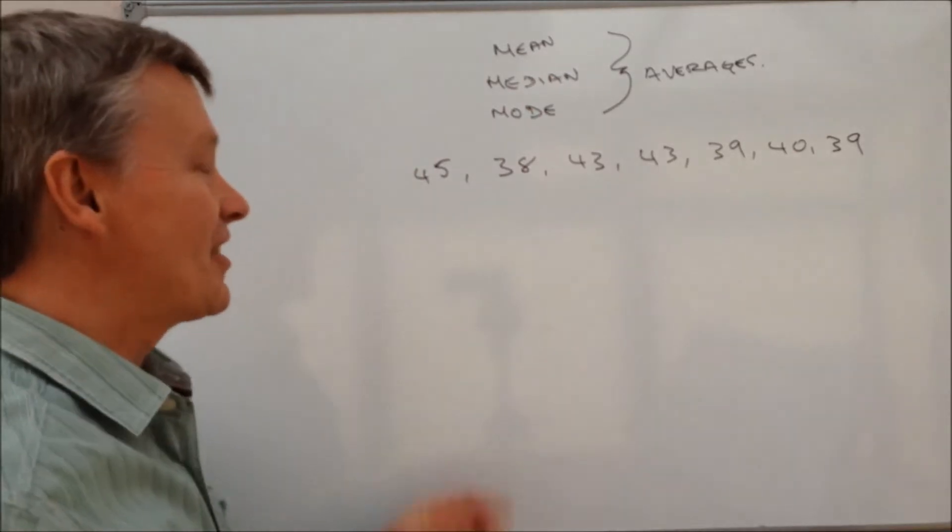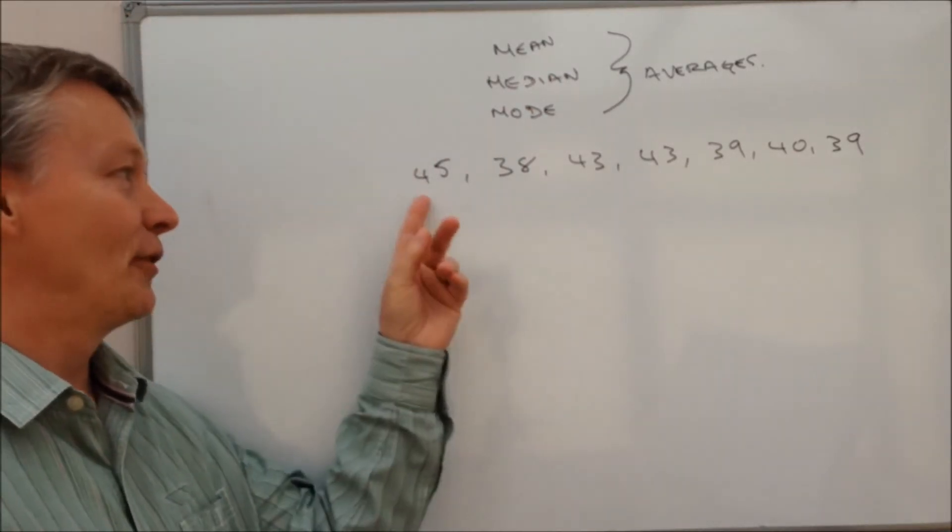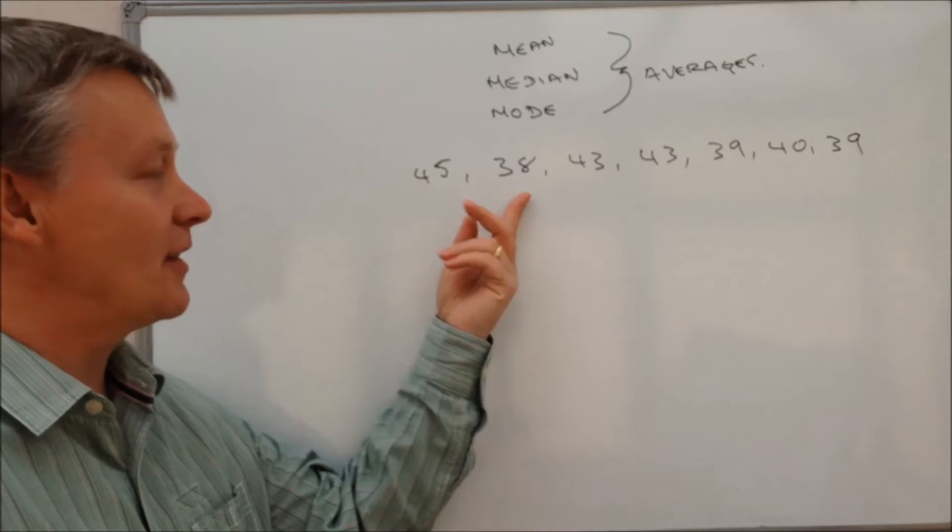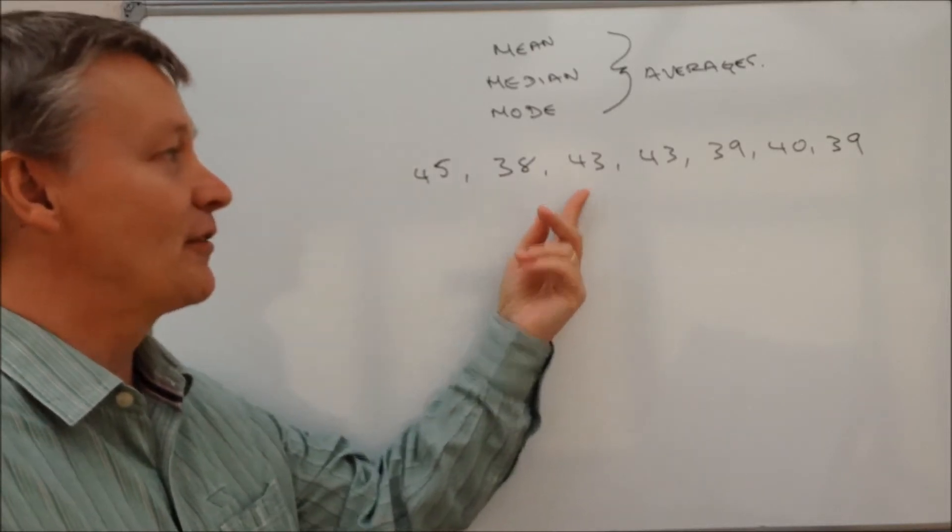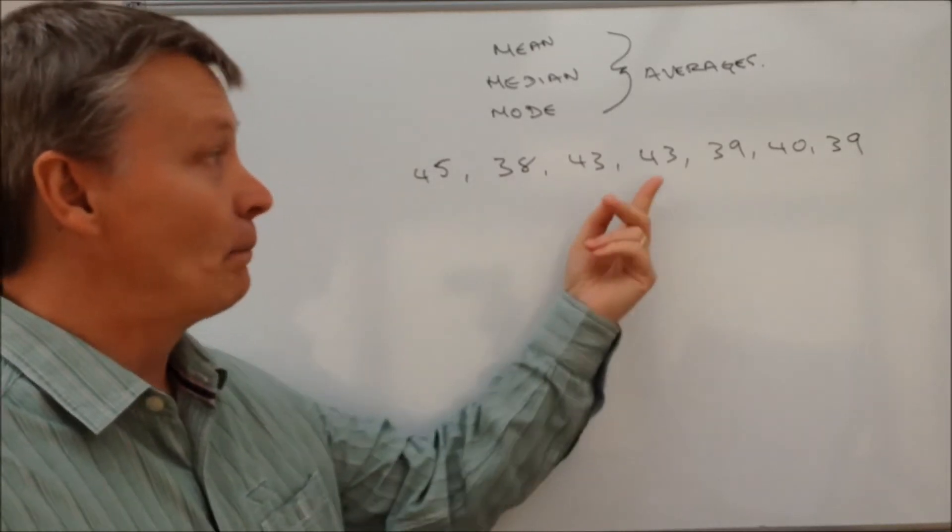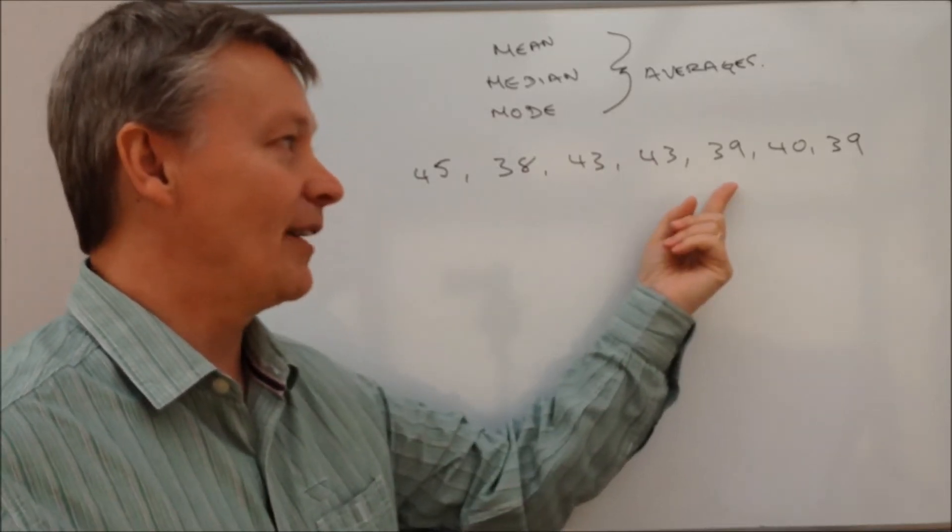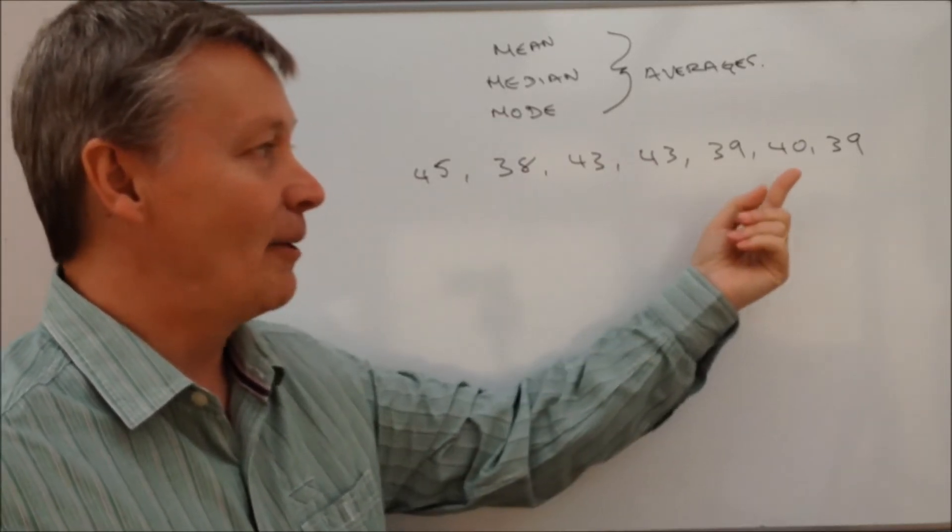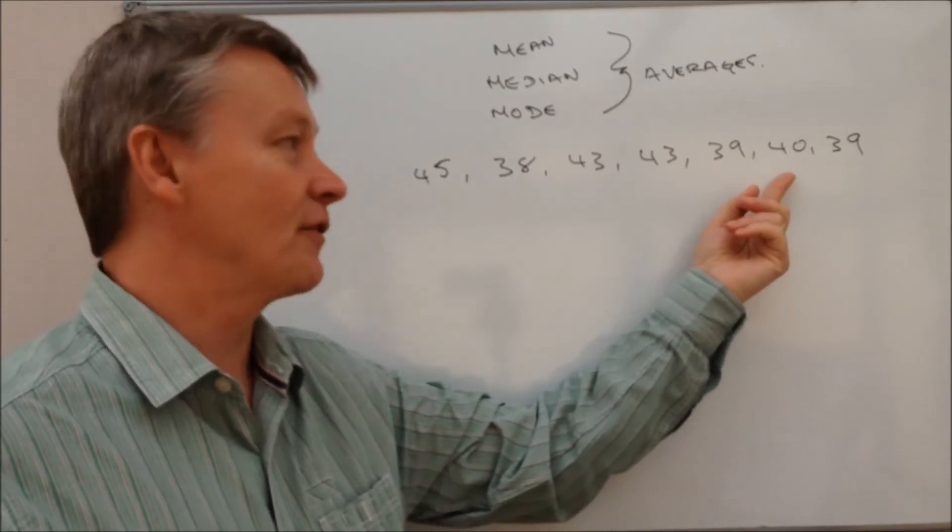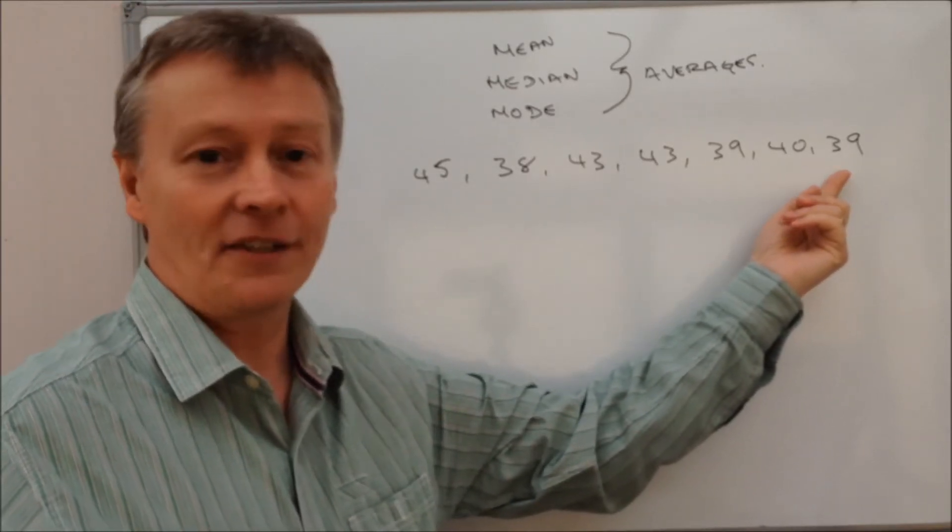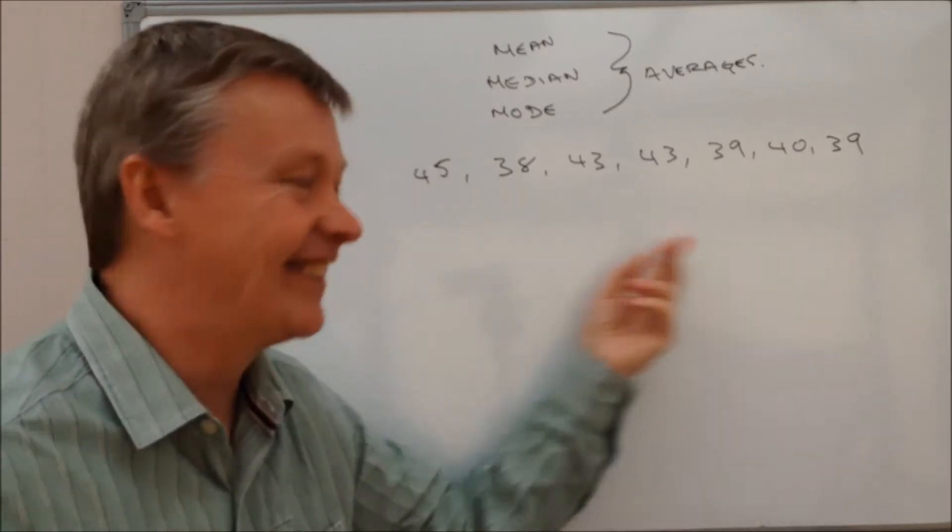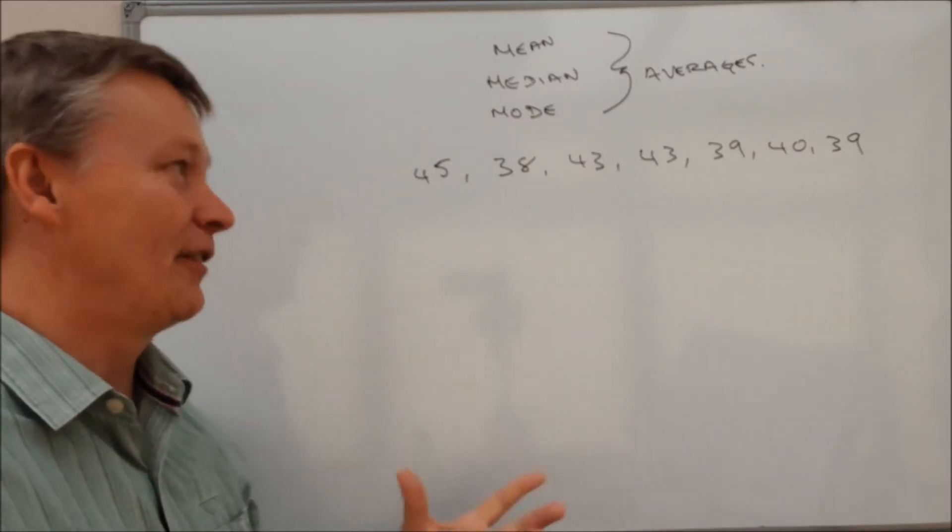So an uncle is 45, another uncle is 38, a brother is 43, a second cousin twice removed is 43, somebody else is 39, younger sister is 40, and great auntie Vera is 39. And so for some reason they do this.